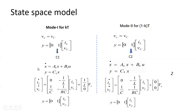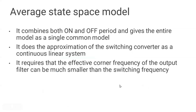We can now write the complete state space model for mode 1 and mode 2. For mode 1: state equation is x-dot equals A1x plus B1u, and output equation is y equals C1x. For mode 2: state equation is x-dot equals A2x plus B2u, and y equals C2x. After substituting A1, B1, C1 and A2, B2, C2 with the values derived earlier, we get the separate state space models for each mode.